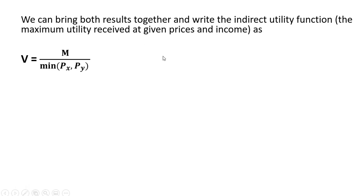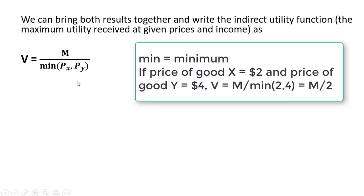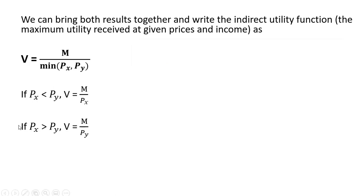Now we can bring both results together and write the indirect utility function — which is just the maximum utility received at given prices and income — as the following. Notice: if the price of good x is less than the price of good y, we're going to have m divided by the price of good x; the minimum value in the denominator is the price of good x, and we have our indirect utility. On the other hand, if the price of good x exceeds the price of good y, then the price of good y will be the minimum value in the denominator. Alternatively, if the price of good x equals the price of good y, your indirect utility is either m divided by the price of good y or m divided by the price of good x, since the prices are the same.